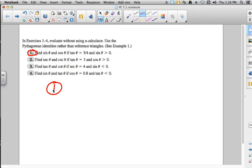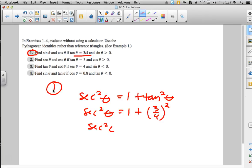The Pythagorean identities are what they want us to use. So if in number 1 they're giving us tangent, we're going to want to use secant squared theta equals 1 plus tangent squared theta. That means secant squared theta is going to equal 1 plus 3/4 squared. So secant squared theta is going to equal 1 plus 9/16.